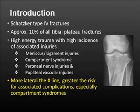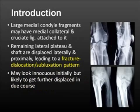As an introduction, large medial condyle fragments may have medial collateral or cruciate ligaments attached to them. As a result, the lateral condyle has very little attachment and tends to migrate proximally. Therefore it is not a simple fracture — it may end up in a subluxation or dislocation of the knee joint on the lateral side. The fracture may look innocuous initially, but as displacement increases, subluxation or dislocation may occur, and that has to be kept in mind while planning treatment.